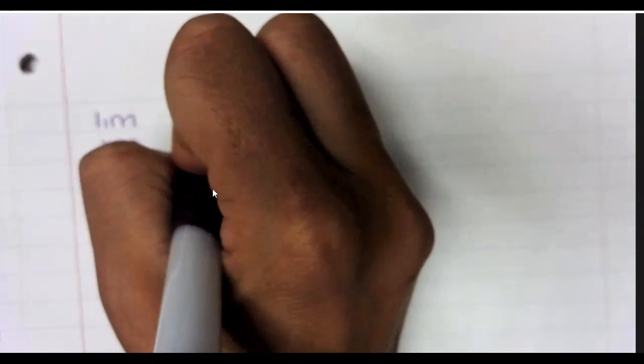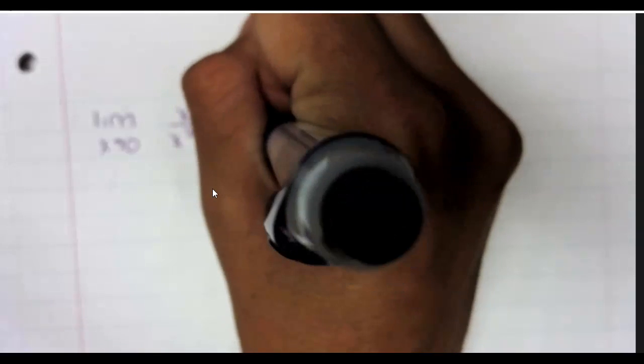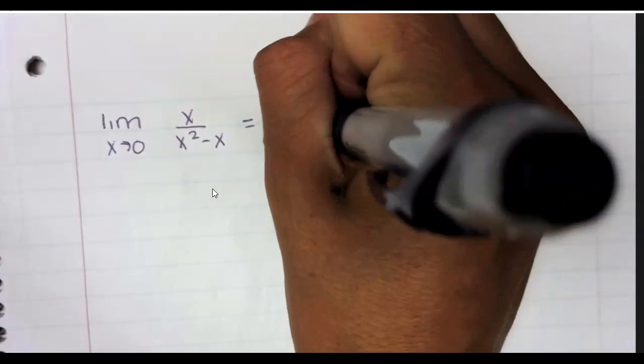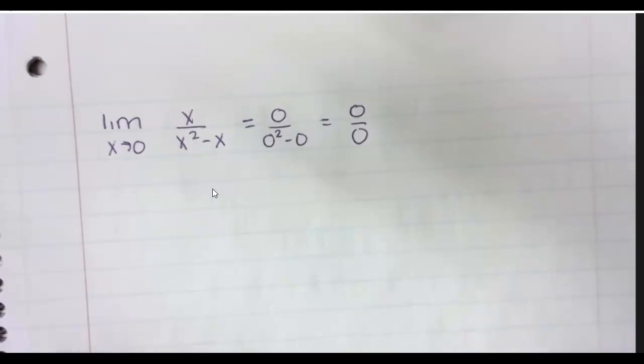So for number three, we have the limit as x approaches zero of x over x squared minus x. The very first thing you have to do is show that it's the indeterminate form. You do. So you have to show it's indeterminate.